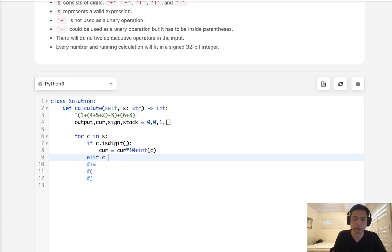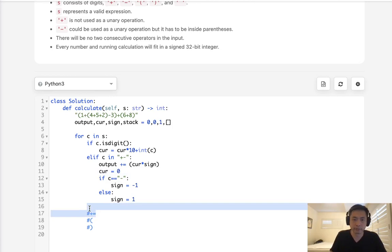Now, otherwise, if C is equal to, or I should say, in plus or minus, well, there's a couple things we want to do. We want to reset our current to equal 0. And we want to add to our output whatever we've calculated so far. So, we'll say output plus or equal cur times sign. Now, depending on whether this is a plus or minus, if C equals minus, then we want to set this sign to equal negative 1. Otherwise, make the sign equal to 1. So, we're going to just put this here. Okay, so we've taken care of the operator.